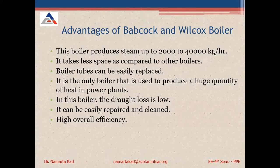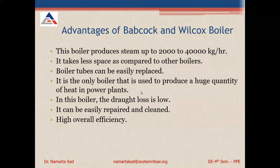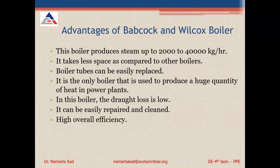Advantages of the Babcock Wilcox boiler: it produces steam at 2,000 to 40,000 kg per hour, takes less space compared to other boilers, and the boiler tubes can be easily replaced. It is the preferred boiler for producing large quantities of steam in power plants. The heating area is more than in fire tube boilers, steam is generated more quickly, and the heat drop loss is low.